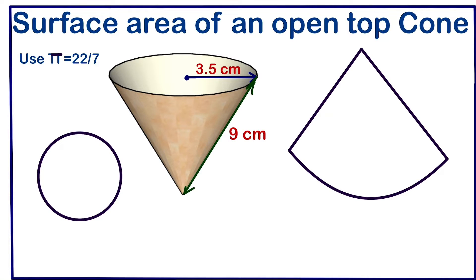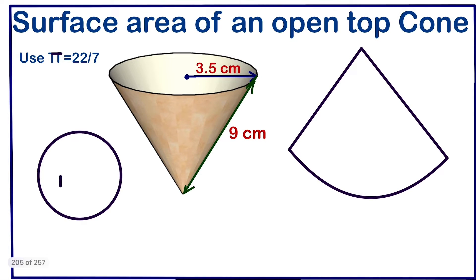The area of a circle is πr². Since we are working with an open top cone, it means we are not going to consider the top of the base, so we'll be left only with the lateral area. Looking at this lateral area, this part is called the slant height.